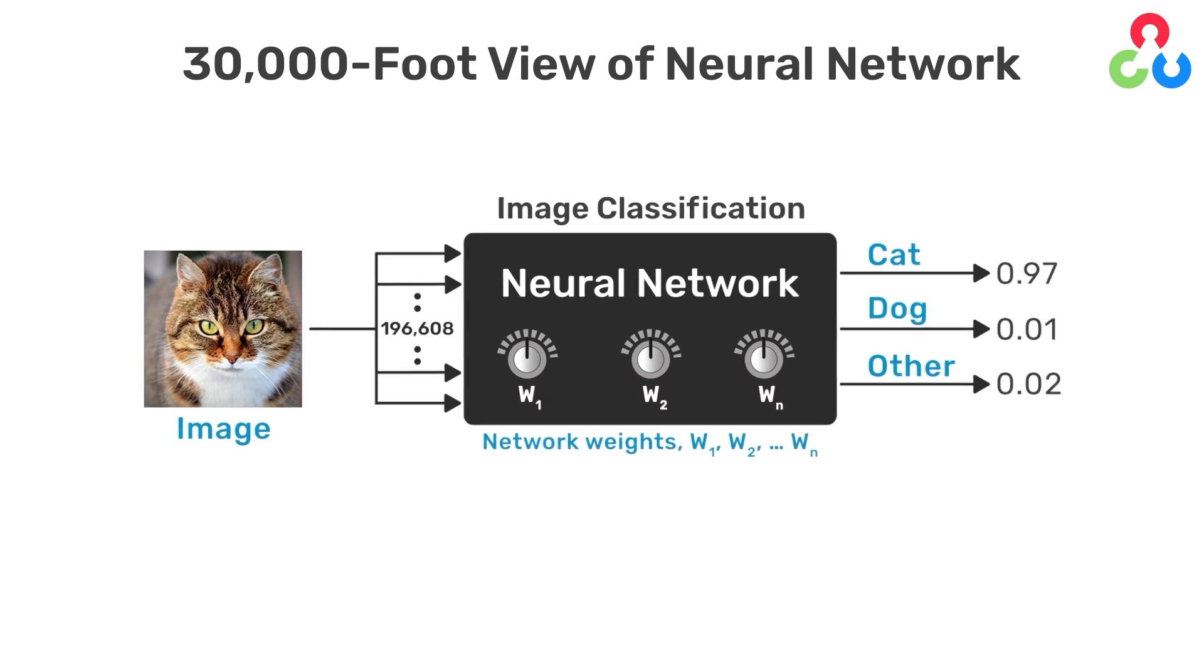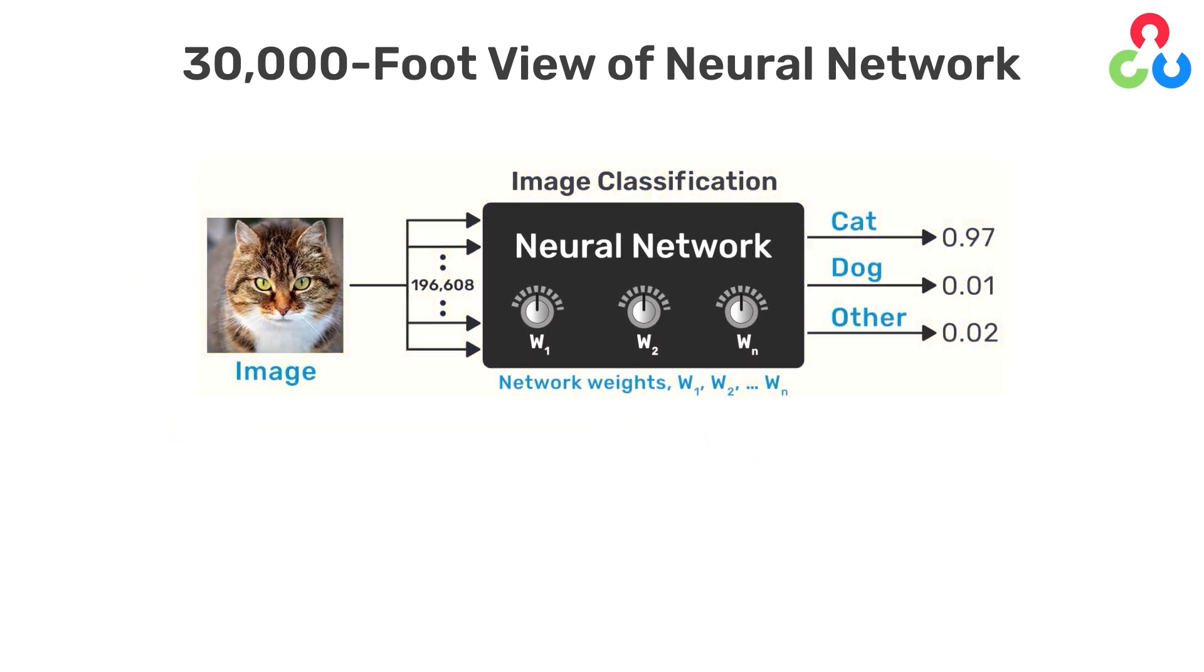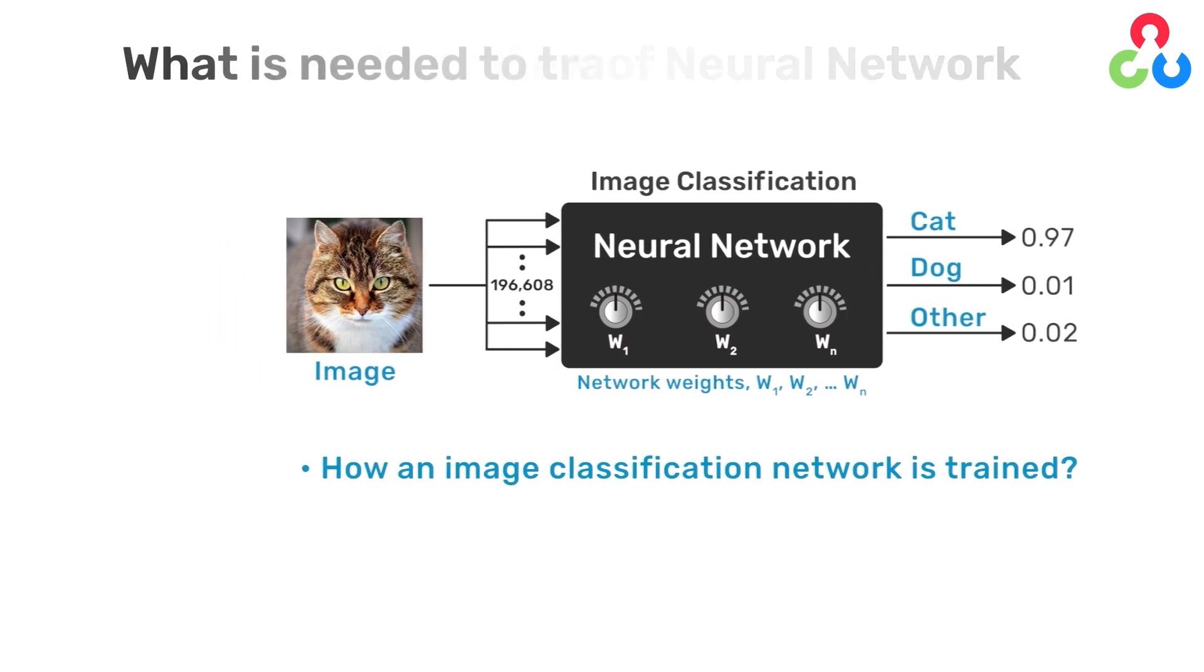In this video, we'll continue with the same example and delve deeper into how an image classification network is trained. To train a neural network to perform image classification, we need three things.